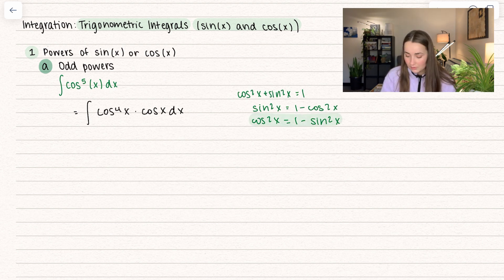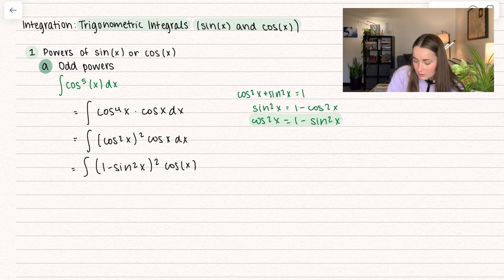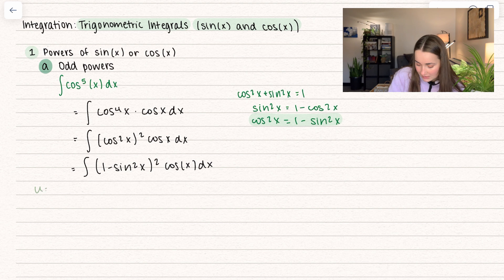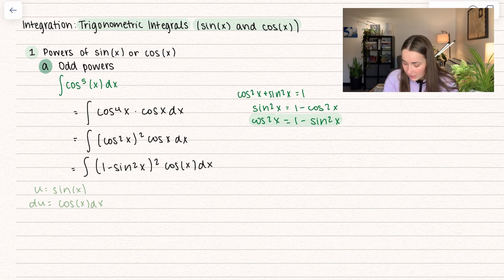We separated this out — now we have cosine to the power of 4, and I'm going to rewrite that as cosine squared of x to the power of 2. Now I'm going to plug in using that identity: 1 minus sine squared of x, all squared, times cosine of x dx. The purpose of doing this is so we can use u substitution. I set u equal to sine of x, and when I take the derivative of both sides, I get cosine of x dx — which is exactly the cosine we left out.